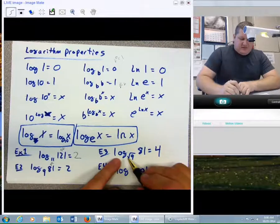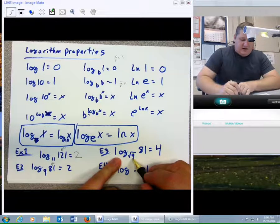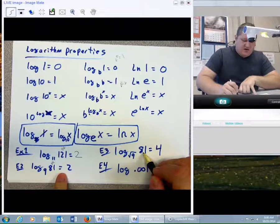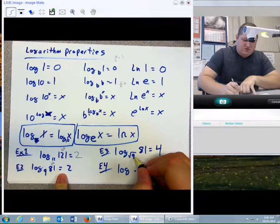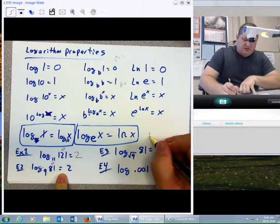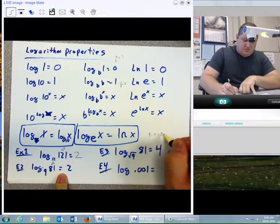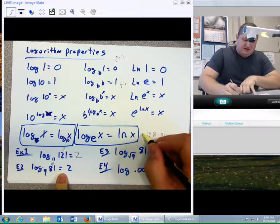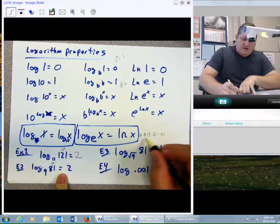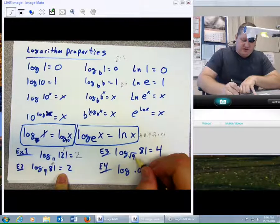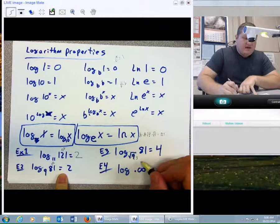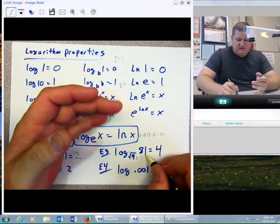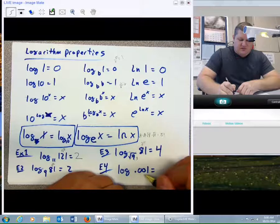Now, if I have log base square root of 9 of 81, in this case, we can adjust both pieces. How many square roots of 9 go into 81? Well, 9 times 9 equals 81. So, if I have square root of 9, that together would only be 9. I'd need 2 more of them to equal 81. Alternatively, you could rewrite square root of 9 as 3. How many 3s make 81? Well, 3 times 3 is 9, times 3 is 27, times 3 is 81. 3 to the 4th power, 4 is the answer.